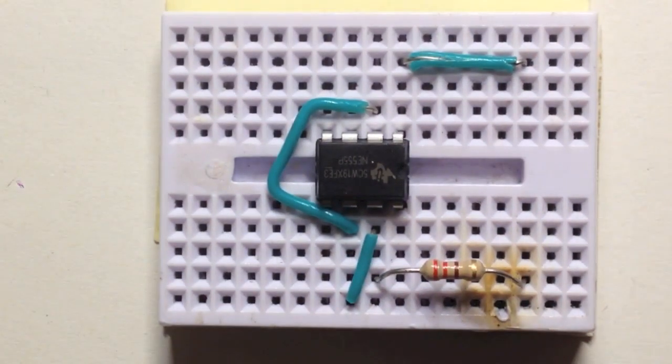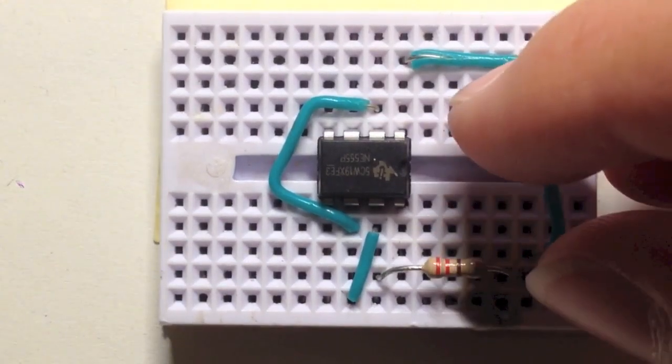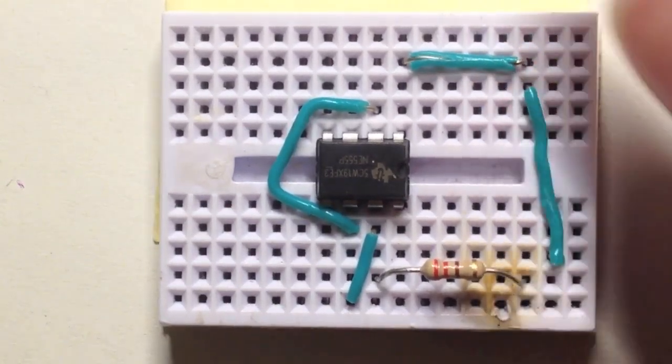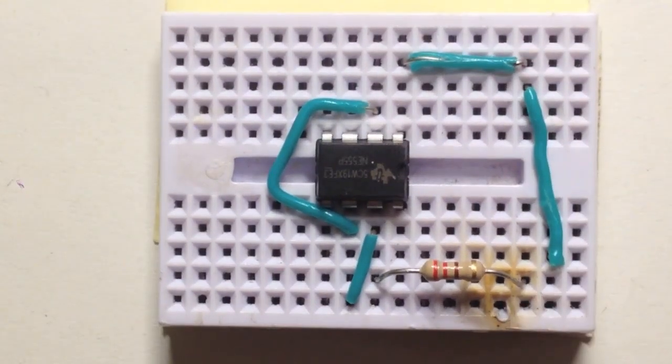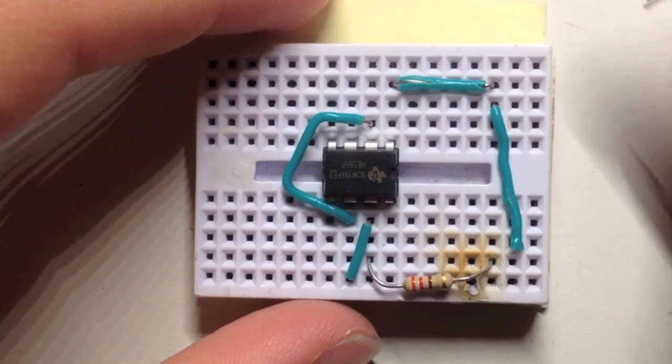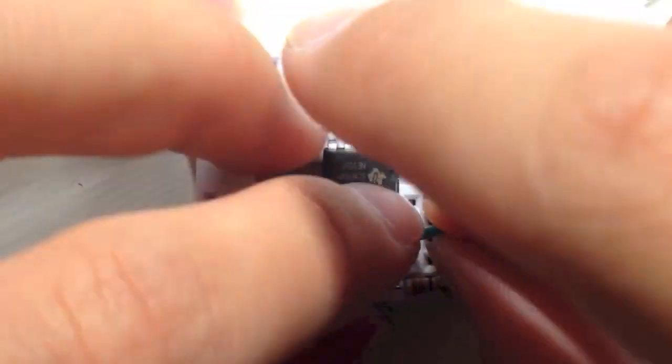Attach an extension piece from the negative rail over to the other side of the board. Make sure that the negative and positive rails do not touch each other. Otherwise, a short circuit will be created which can damage the power supply. Then, proceed by attaching an extension piece to pin 8 to the positive rail or the other end of the 220 ohm resistor.